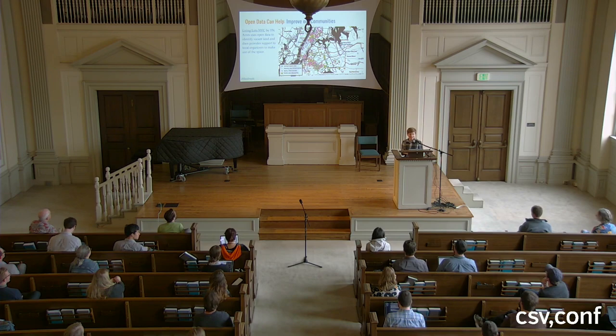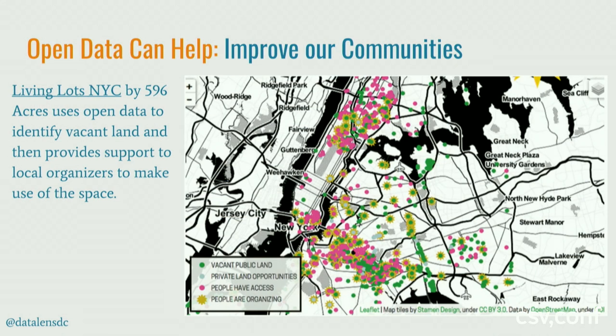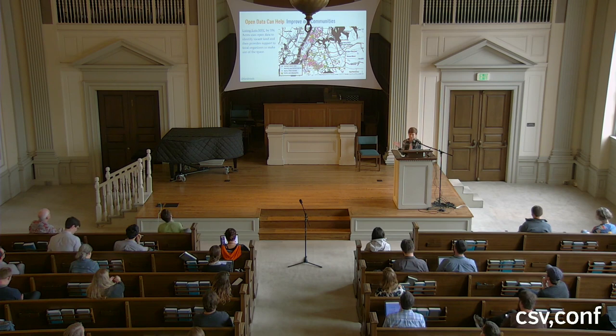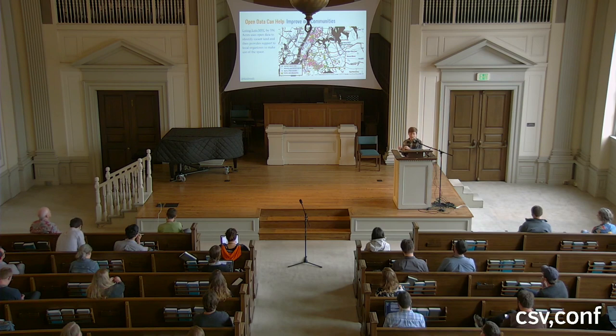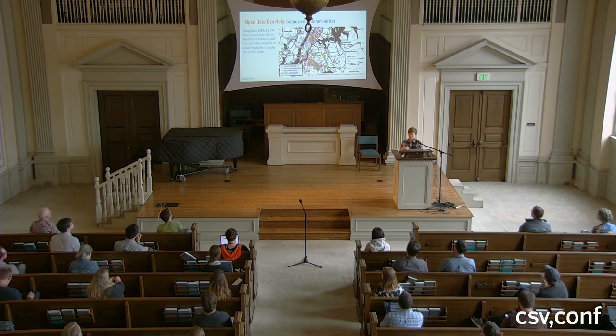Open data can also help improve communities. Living Lots NYC from 596 Acres used open data to identify hundreds of vacant lot spaces in New York City and who owns them. They created resources for community leaders to convert those lots into parks, community gardens, or other uses. About 80 acres have been converted — using open data to systematically identify an issue at the city level and bring that information and resources to the community level to fix the problem.